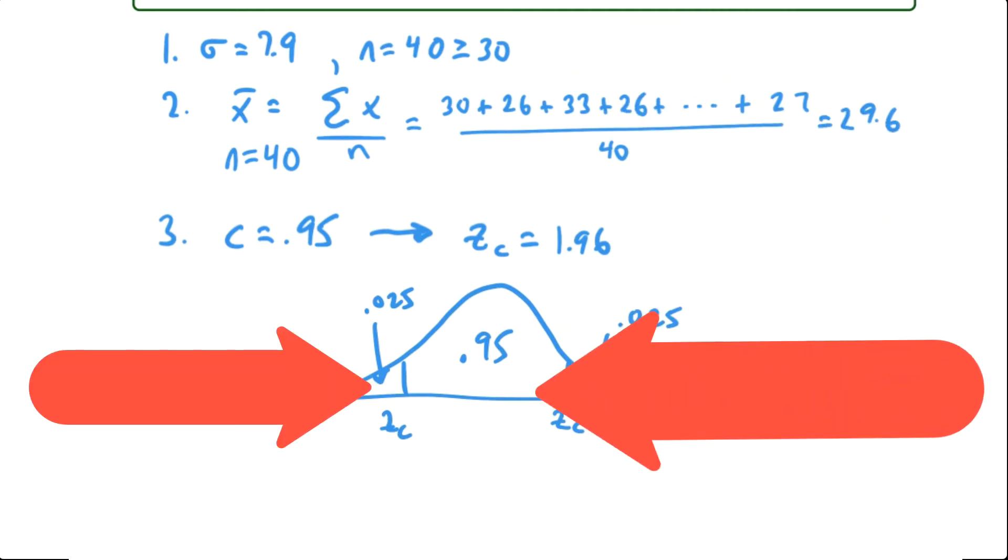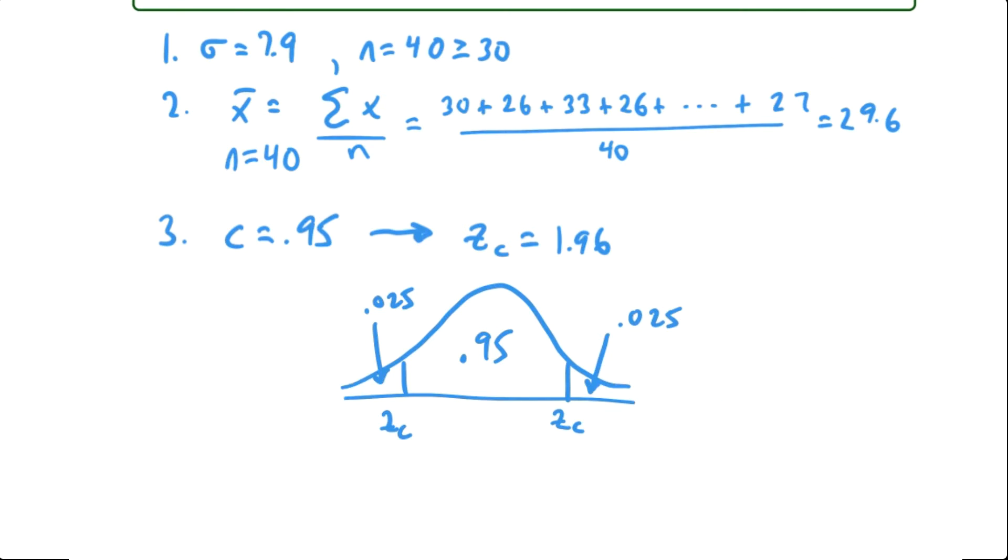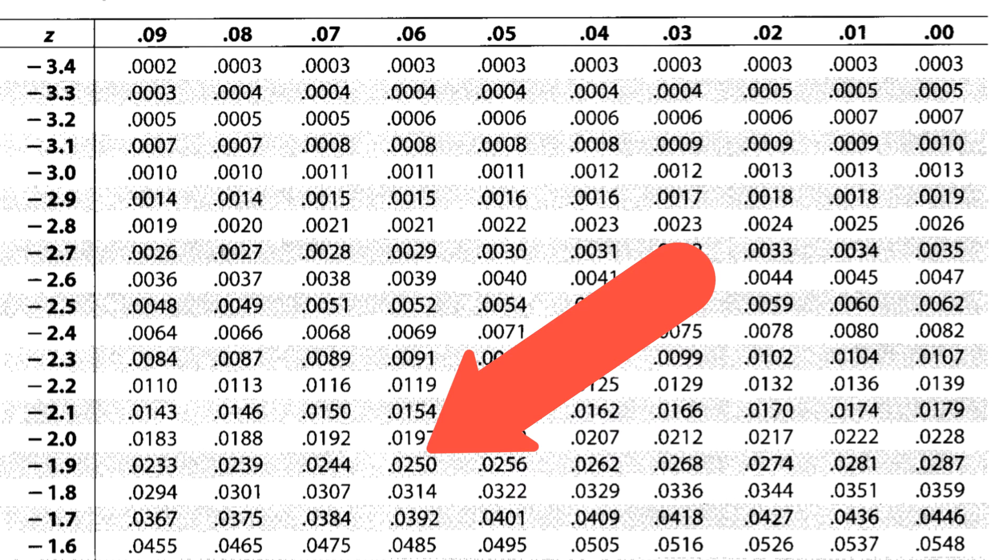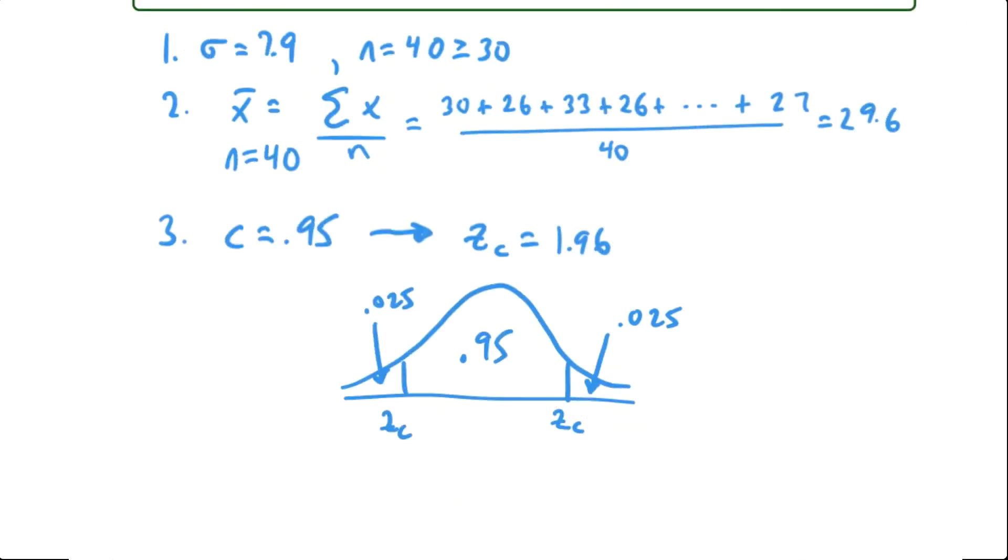And then you go into the normal table. You find the area for 0.025, which you can see right here, and that has a z value of negative 1.96. So I'll put that down here.